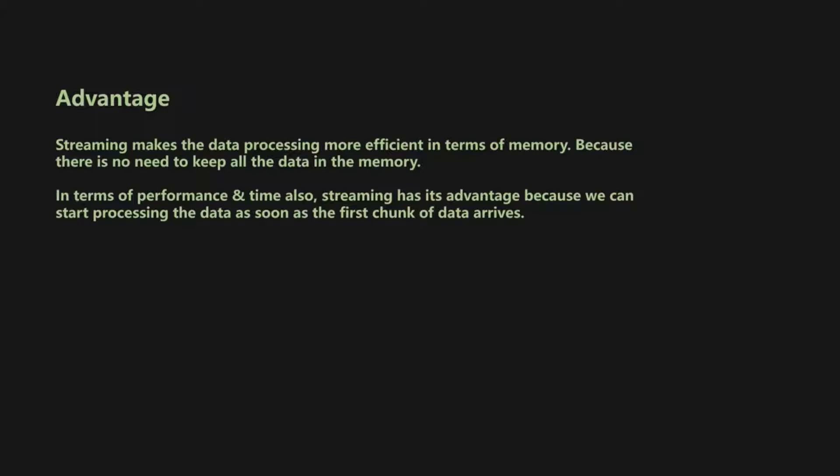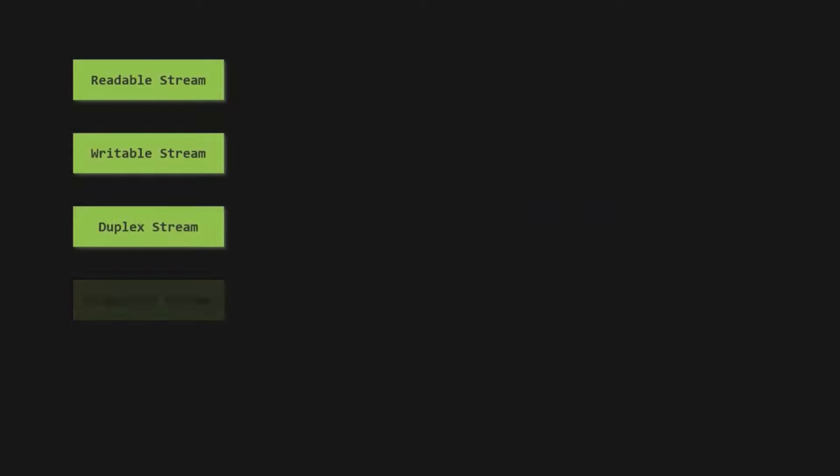Now that we know what streams are, let's talk about how they are implemented in Node.js. In Node.js, there are four types of streams: readable streams, writable streams, duplex streams, and transform streams. The readable and writable streams are the most important and common ones, so we are going to focus more on these two. We will also cover duplex stream and transform stream at a high level.